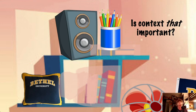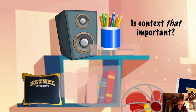People often hop around to random verses without considering context. But if we read any other book, we don't take isolated statements in the middle of the book and ignore the surrounding statements. So why do we do this with Scripture?